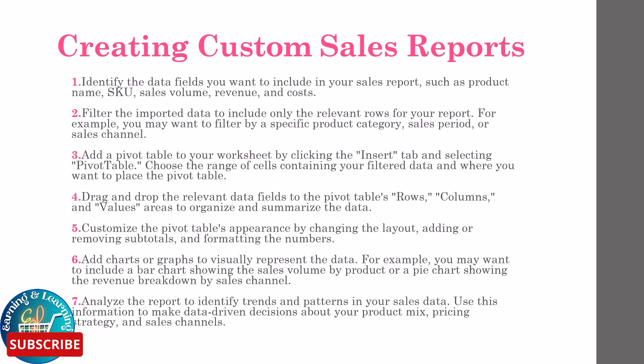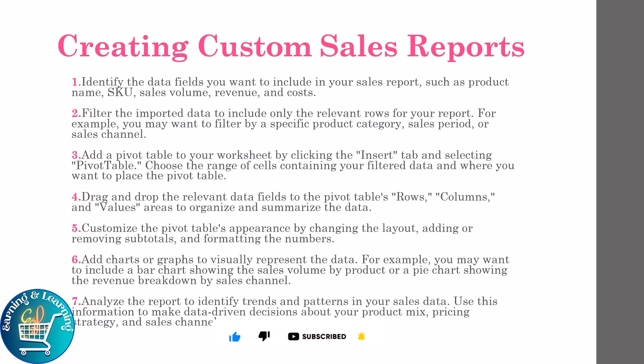Customize the pivot table's appearance by changing the layout, adding or removing subtotals, and formatting the numbers. Add charts or graphs to visually represent the data — for example, you may want to include a bar chart showing sales volume by product, or a pie chart showing the revenue breakdown by sales channel. Analyze the report to identify trends and patterns in your sales data, and use this information to make data-driven decisions about your product mix, pricing strategy, and sales channels.